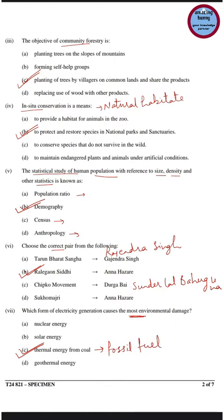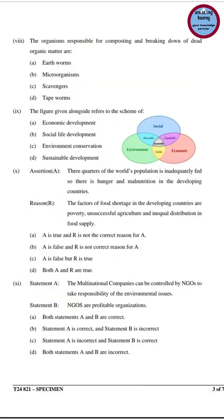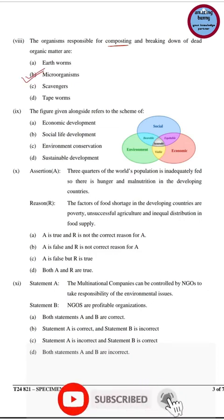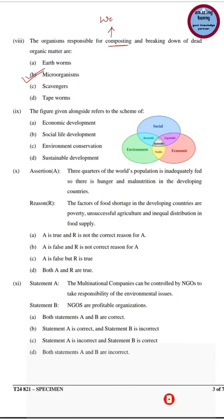Fossil fuels like coal and oil do substantially more harm than renewable energy sources. The next question: the organisms responsible for composting and breaking down dead organic matter are microorganisms. Composting is a technique of converting household or agricultural waste into compost. It is a waste disposal technique in which biodegradable waste is decomposed by microorganisms and converted into manure.